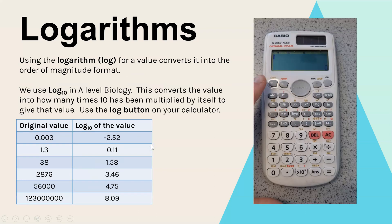So what we do is convert to log, and what that means is you now present your original value in the order of magnitude format instead. In biology we use what's called log 10, and what that means is when you convert your original value to log 10, that is telling you how many times 10 has been multiplied by itself to give you that value.